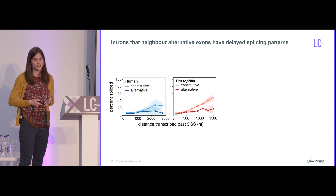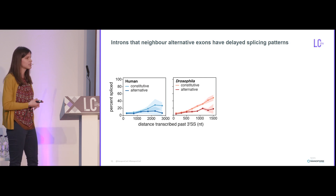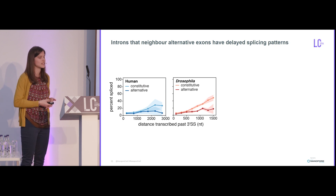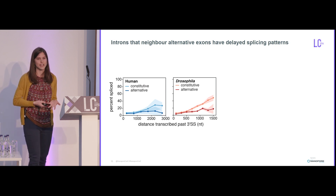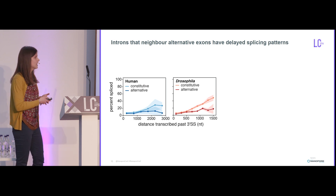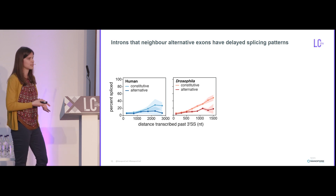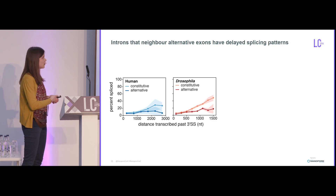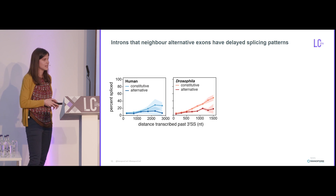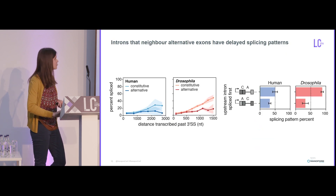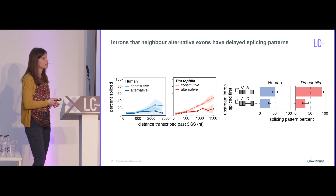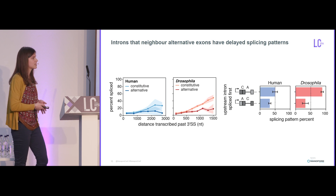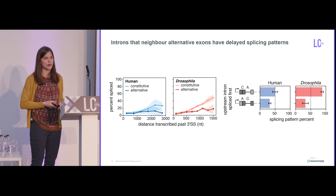The last piece of data is work from a postdoc in our lab, Karine Shokr, where she took the NanoCOP data and asked whether introns that neighbor alternative exons tend to have different splicing dynamics. She compared introns neighboring constitutive exons versus those neighboring alternative exons, and found that those neighboring constitutive exons tend to have more rapid splicing dynamics. She also found that constitutive exons tend to be spliced before alternative exons, really suggesting that alternative splicing seems to have more of a delay.